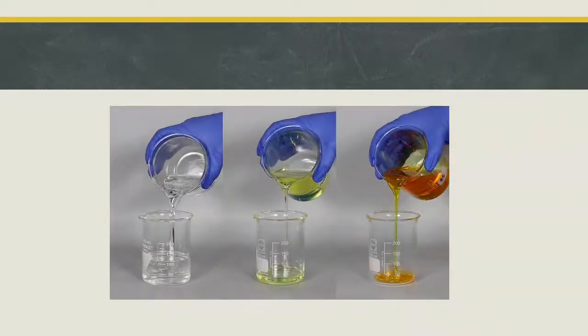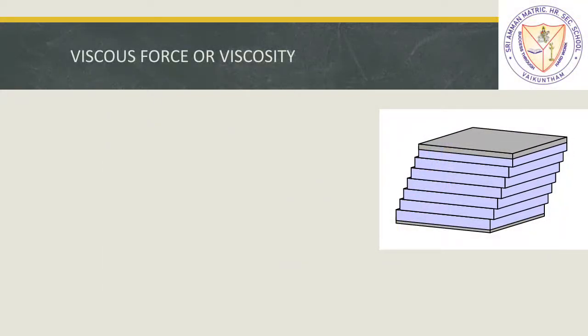These are four different applications of surface tension which we come across in our day-to-day life. Now, if we take water, oil, and honey and start pouring them, which of them will flow faster? Obviously water, and which will be the slowest? Honey. Why do they have different speeds? This is answered by a special force named viscous force.